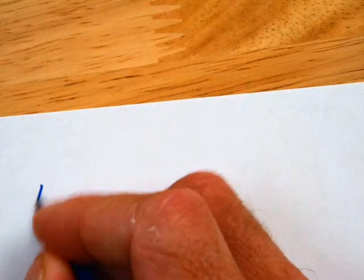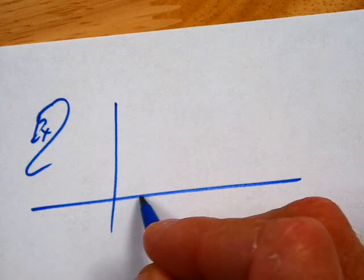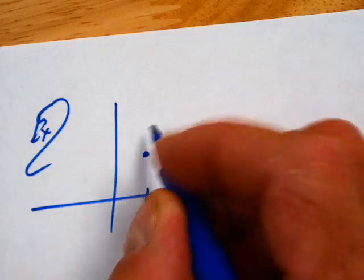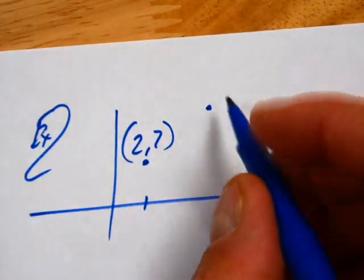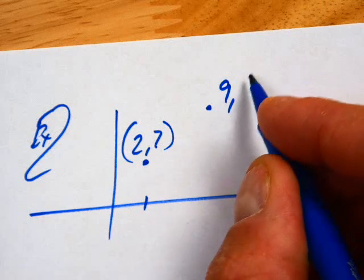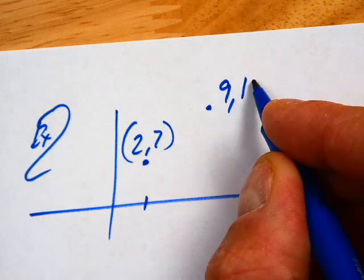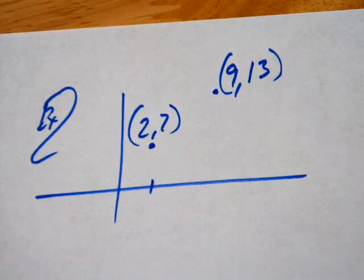First of all, I'm going to start off with this. What if I have an exponential function that goes through the point, I'm just going to make stuff up, (2, 7), and also goes to the point (0, 9)... (0, 13). How can I find an exponential function to model that?